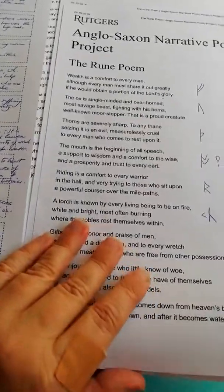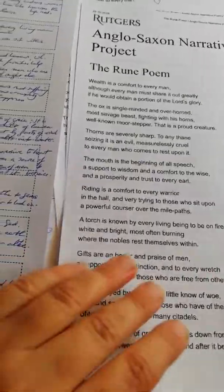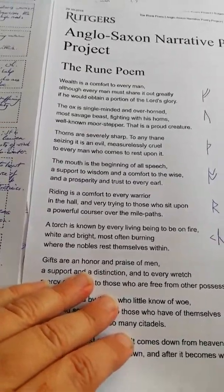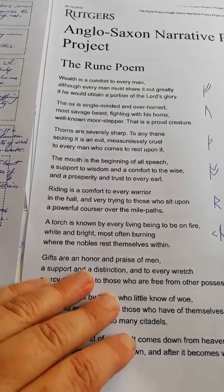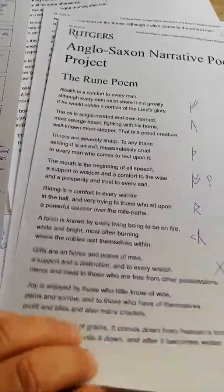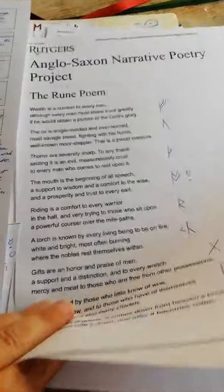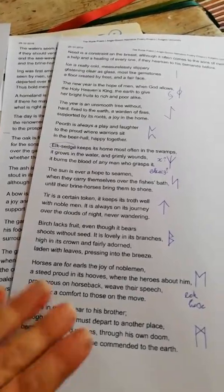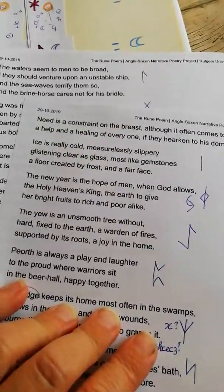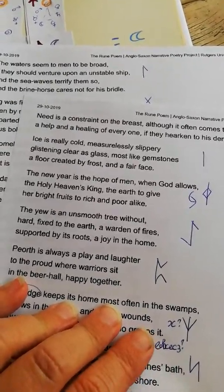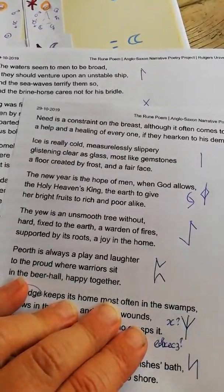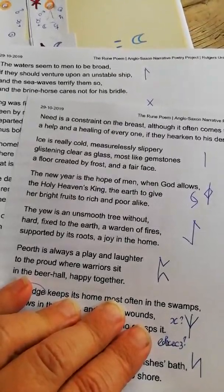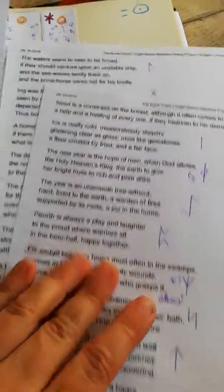So the other translation that I showed you first, this one here, is actually really nice, especially to compare to the old one. And there are a couple of rather major differences. And there's a couple of things that I don't really understand. It's very mysterious and it's really cool to be working on in the wintertime. And so if I go back to my Isa rune just now, here at the top. Ice is really cold, measurelessly slippery, glistening clear as glass, most like gemstones, a floor created by frost, and a fair face. That's what he says. This is a newer translation done by Dr. Aaron Holstetter.